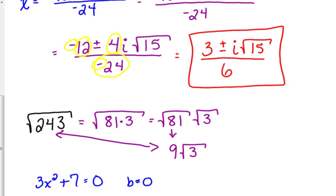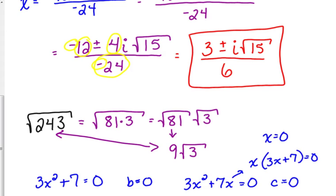Same thing goes if there's not a constant on the end. If that were 3x squared plus 7x, then c is 0. Now, you really wouldn't want to do that one using the quadratic formula, because what should we do? Factor out an x. That one's really easy to solve. So you're not really going to run into both, but you may run into the case where b is 0.